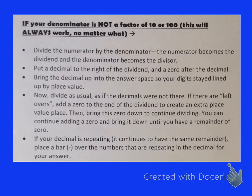If there are leftovers, we'll add a zero to the end of the dividend to create an extra place value, then bring this zero down to continue dividing. You can continue adding a zero and bring it down until you have a remainder of zero. And if your decimal is repeating, meaning it continues to have the same remainder over and over again, then we simply place a bar over the numbers that are repeating in the decimal for the answer.